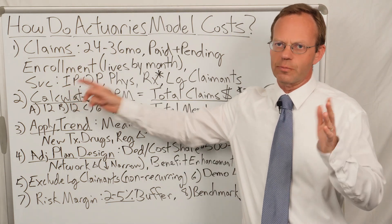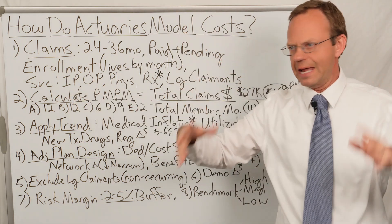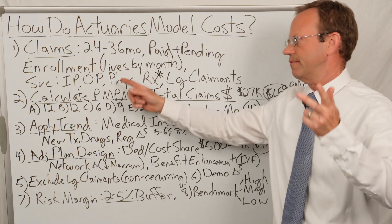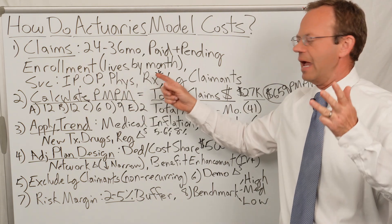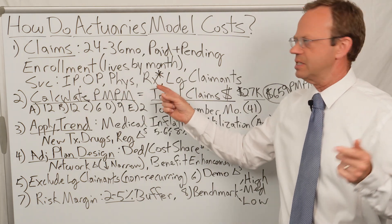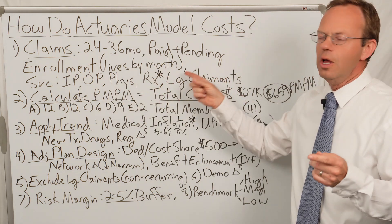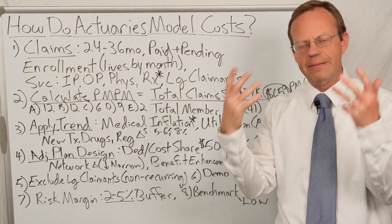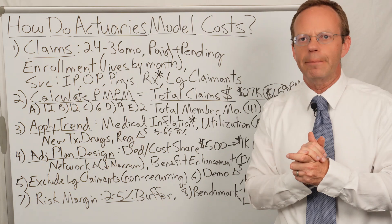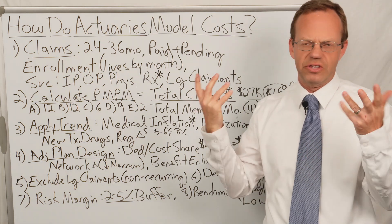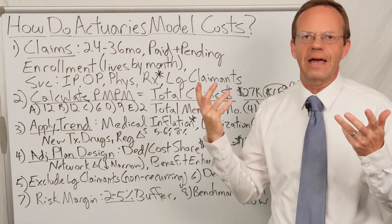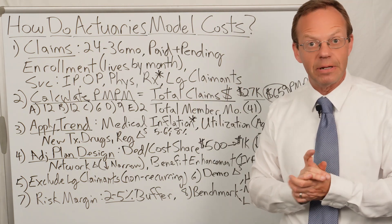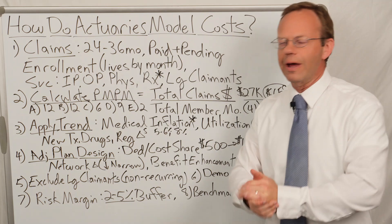Those claims costs are broken down into big categories like inpatient, outpatient, physician, and prescriptions. They also look at very large claimants that hit the specific stop loss level — typically about $100,000 for a claimant over a 12-month period of time.